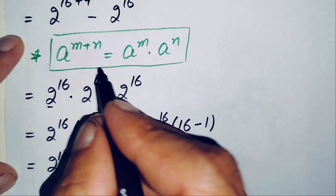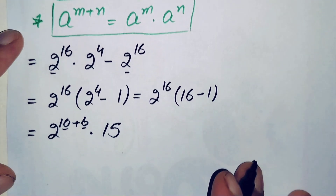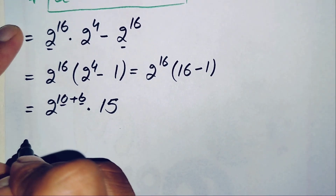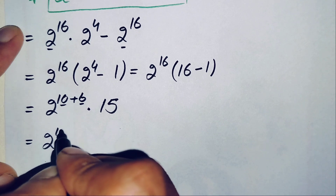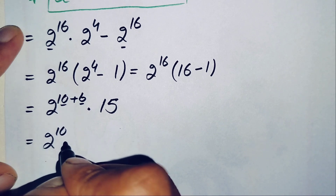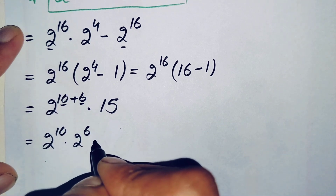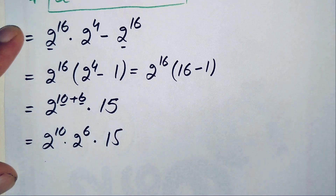Using the same exponential property again, we split 2 raised to power 16 over the exponent 10 plus 6. This gives us 2 raised to power 10 times 2 raised to power 6, times 15. Now we will multiply all three of these numbers together.